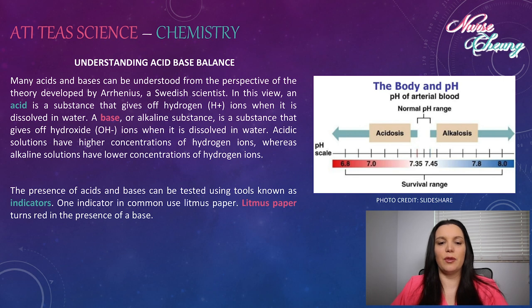Many acids and bases can be understood from the perspective of the theory developed by Arrhenius, a Swedish scientist. In this view, an acid is a substance that gives off hydrogen ions when it is dissolved in water. A base or alkaline substance is a substance that gives off hydroxide ions when it is dissolved in water. Acidic solutions have higher concentrations of hydrogen ions, whereas alkaline solutions have lower concentrations of hydrogen ions. The presence of acids and bases can be tested using tools known as indicators. One indicator in common use is litmus paper. Litmus paper turns red in the presence of an acid.